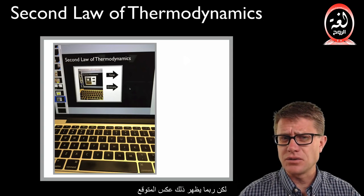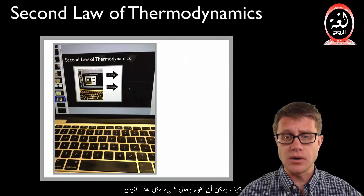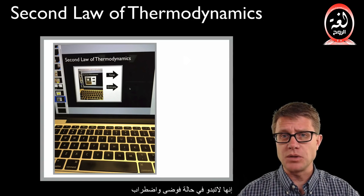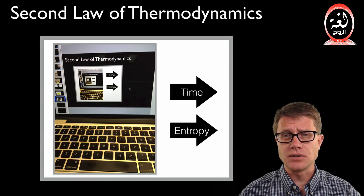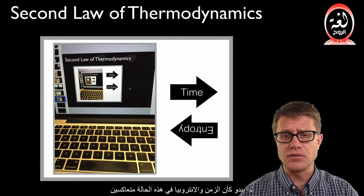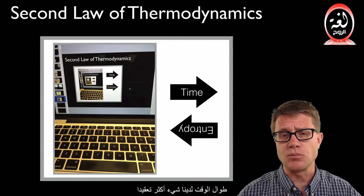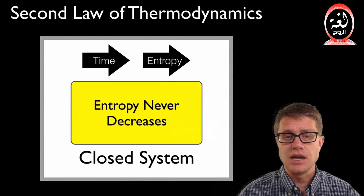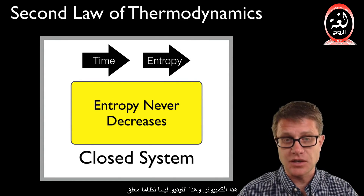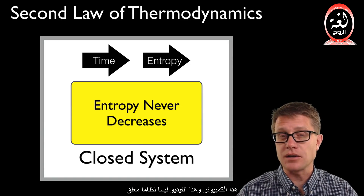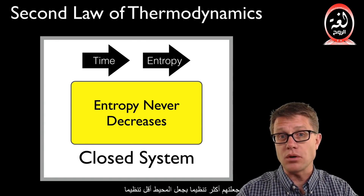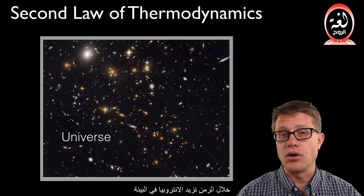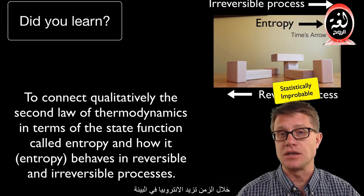But this might seem counterintuitive. How could I make something like this video and this computer? They seem to have a huge amount of order and do not seem chaotic. It seems like time and entropy in this case are reversed — over time we have something more complex. But remember what I said very carefully: entropy never decreases in a closed system. This computer and this video are not a closed system. I made them more ordered by making the surroundings less ordered, and that leads into the idea that over time entropy is going to increase in the environment.